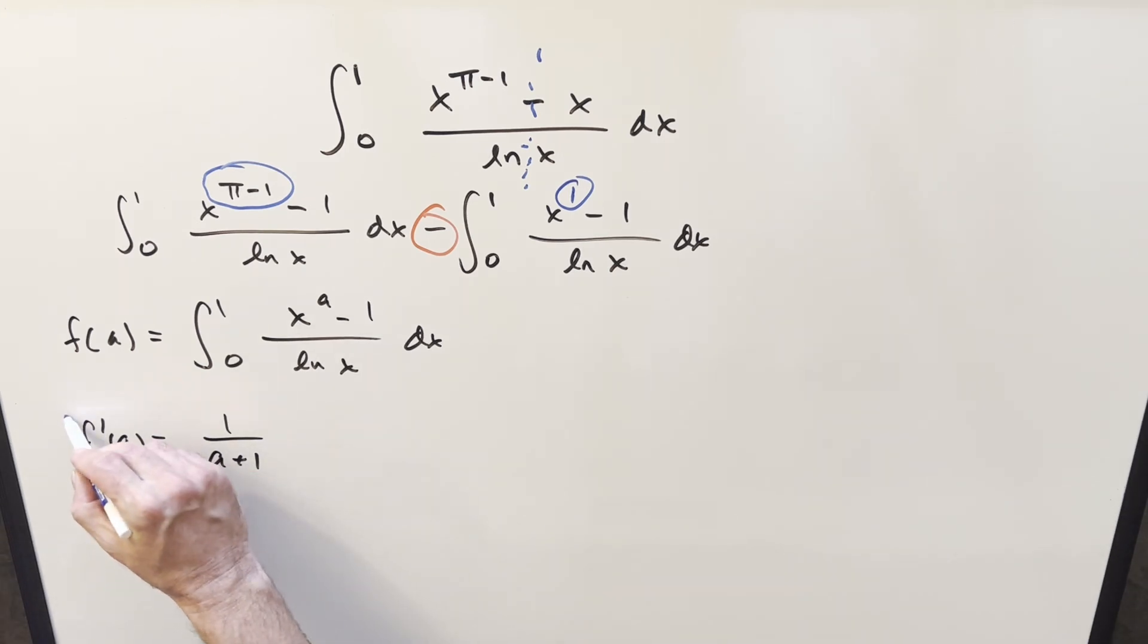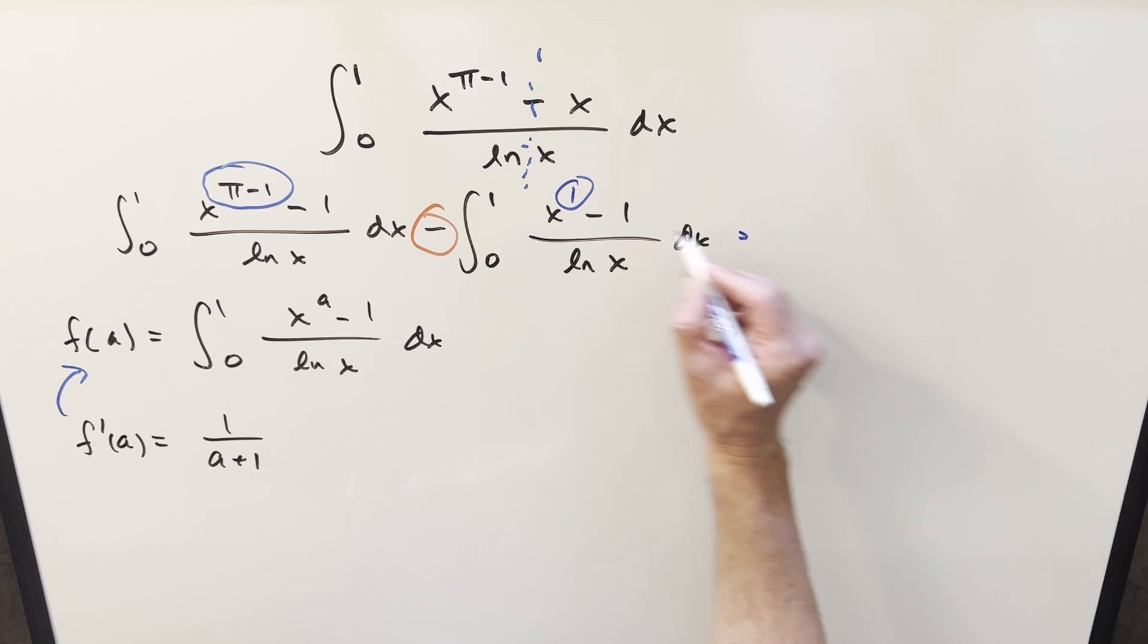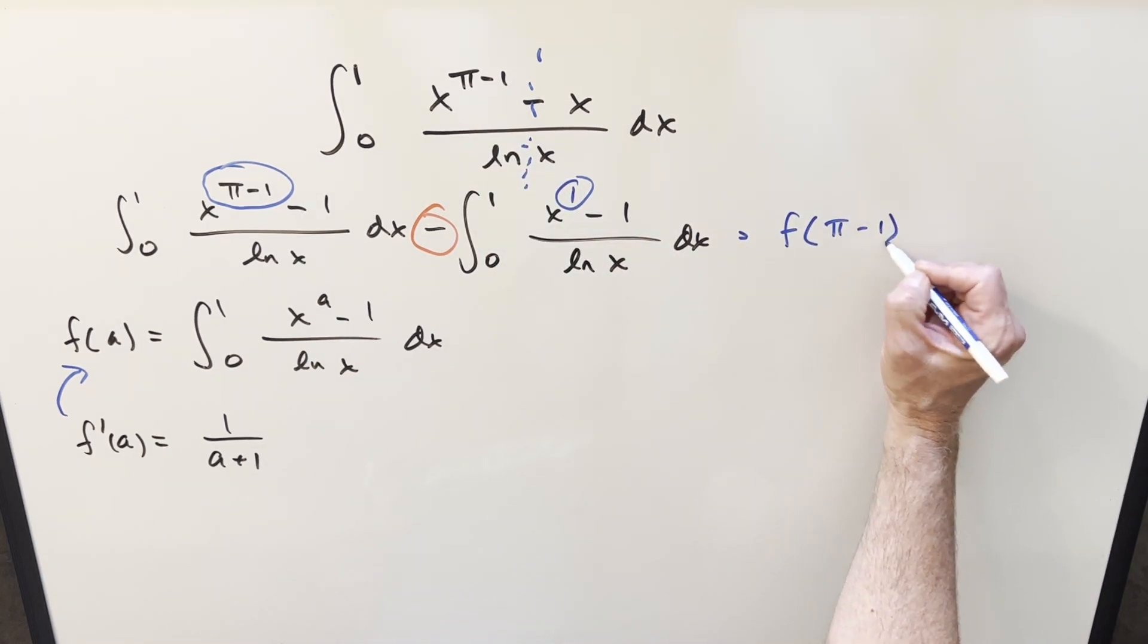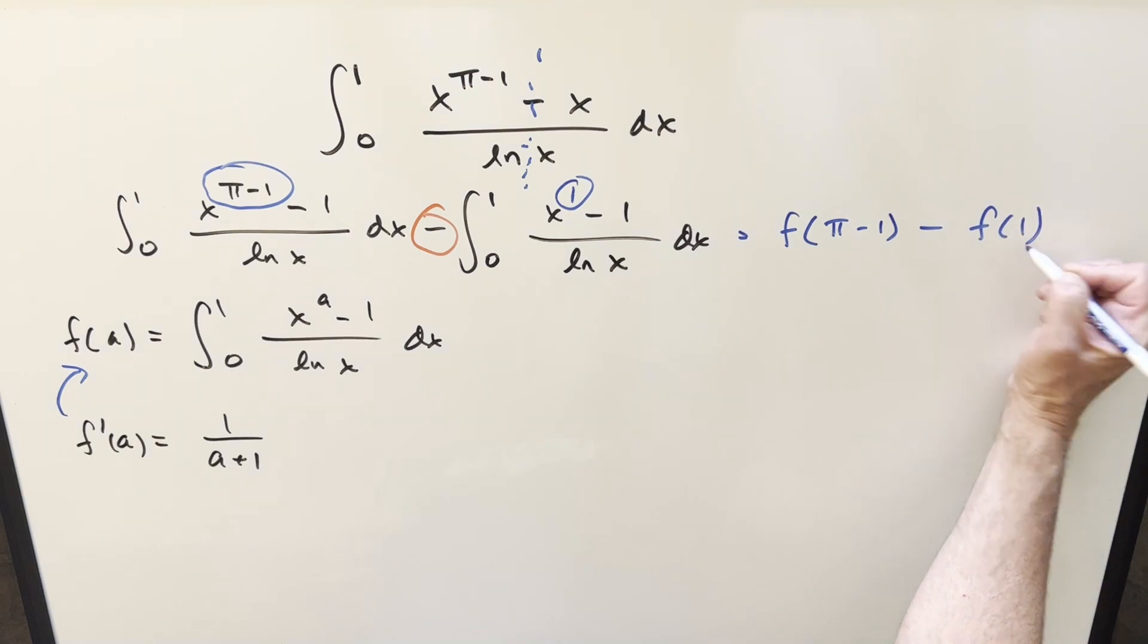And then from here, what I want to do is we want to get back to our f of a value. Because kind of going back to our goal, this is the same thing as our integral. And what we're trying to find, it's going to be f of pi minus 1 minus just f of 1.